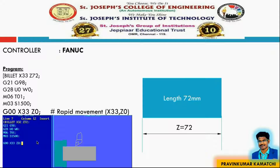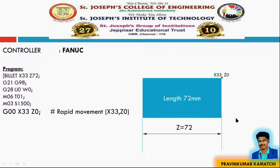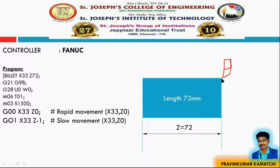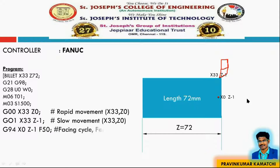Let's start our machine. First we have to do the facing process — this will be our tool start position. Now we have to move the tool towards the depth of cut, giving 1mm depth of cut in the facing operation. We move in a slow manner because the tool is near to the workpiece, so G01 is used. Then G01 X33 Z minus 1 sets our depth of cut. The code for the facing cycle is G94.